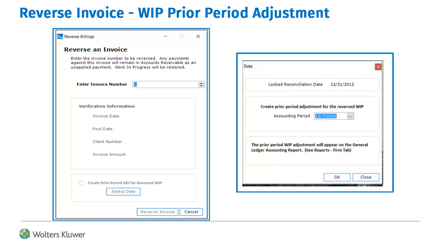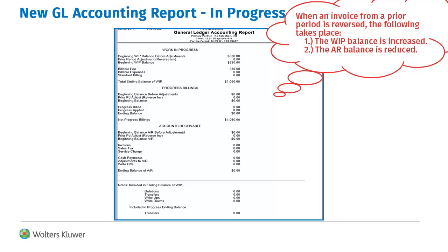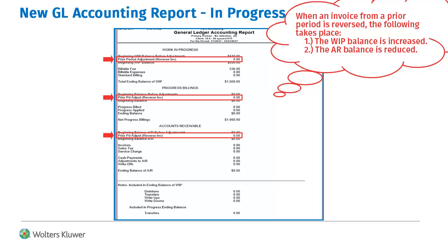When reversing invoices, a new option to declare the current period was added. This allows a new General Ledger Accounting Report to check the dates and create a prior period adjustment for reversed invoices. The new General Ledger Accounting Report will compare the date of the reversed invoice with the current period date to determine a prior period adjustment.